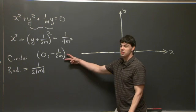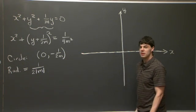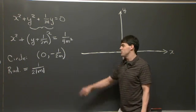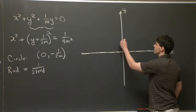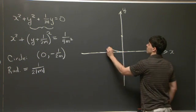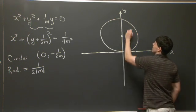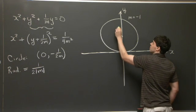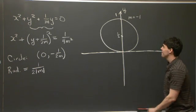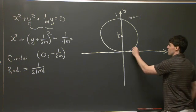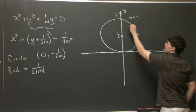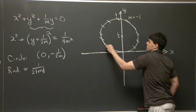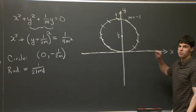For the other isoclines, we just have to pick some values of m and start plotting. So I'll take the value m equals negative 1. And when m equals negative 1, we have a circle which is centered at 0 and 1 half with radius 1 half. So here's 1 half, here's 1. And at every point along the circle, we just draw a little slope of negative 1. So at every point along this curve, the solution has slope negative 1.